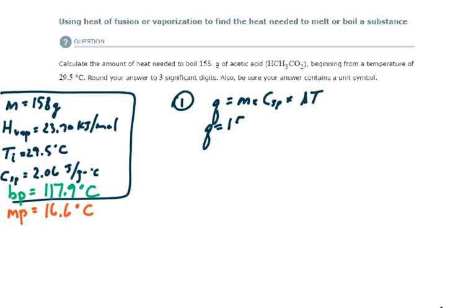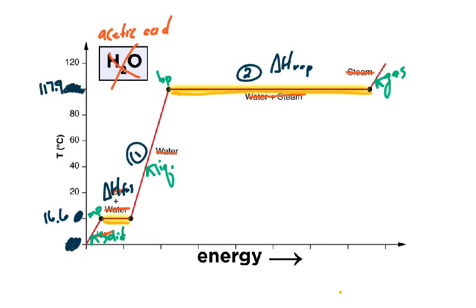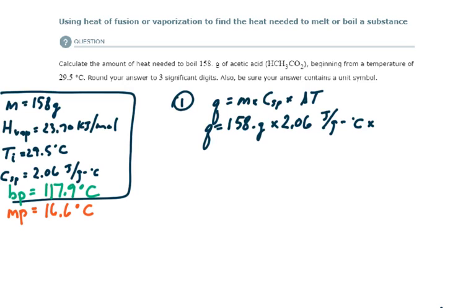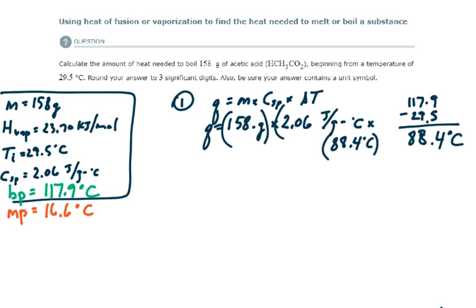Q equals m times specific heat times change in temperature. What's the mass of acetic acid? 158 grams. What's the specific heat of acetic acid? 2.06 joules per gram times degrees Celsius. And what is the change in temperature? Well, I'm starting at 29.5 degrees Celsius, I'm going to the boiling point which is 117.9. So the change in temperature is 117.9 minus 29.5, and that is 88.4 degrees Celsius.